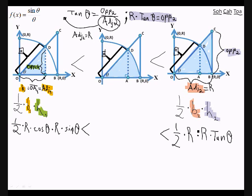Alright, so we've got quite a bit on our screen so far. How do we find the area of an arc with trigonometry? If you recall, the formula is one half times theta times R squared.